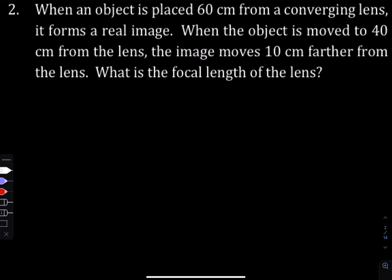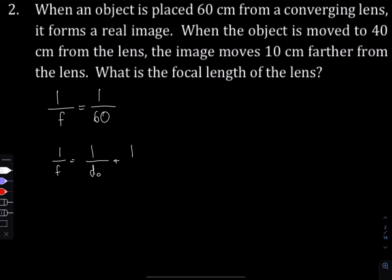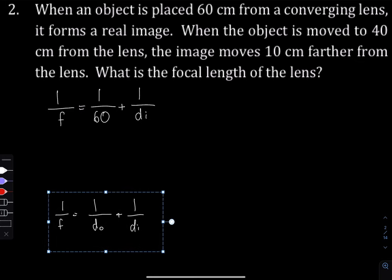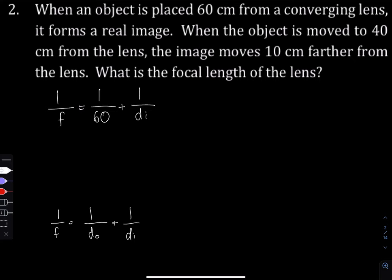Let's go to our second practice problem — this is a tough one. An object is placed 60 centimeters from a converging lens and it forms a real image. We don't know the focal length. Then in a second situation, the object has moved to 40 centimeters from the lens — same lens, same focal length — so we make the distance from the object 40 centimeters.